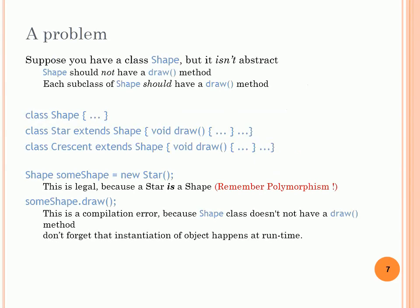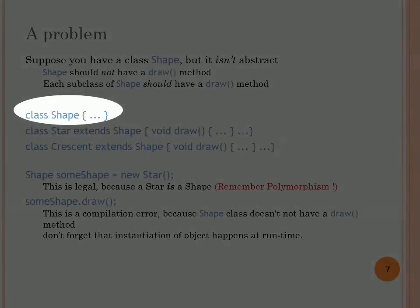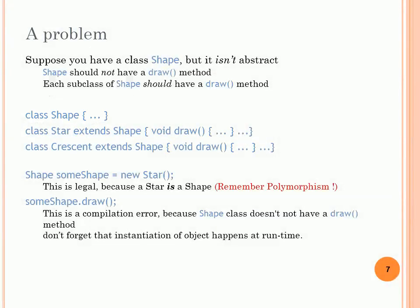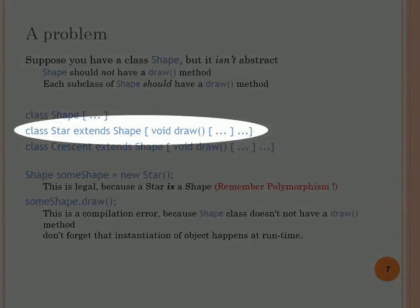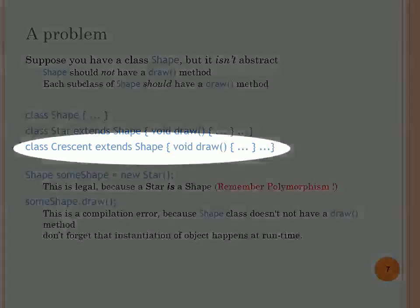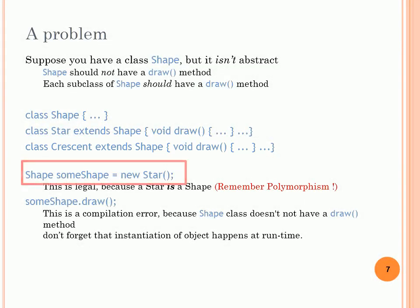Why did we not solve the problem using plain inheritance? We create a class called Shape but don't define the draw function, since we don't want to draw a general shape — we want to draw specific shapes like Star and Crescent. We create a class Star that extends Shape with a draw function, and a class Crescent that also extends Shape. In the main, we create a Shape object instantiated as a Star and call draw. This causes a compile-time error because draw was not defined in the superclass Shape.